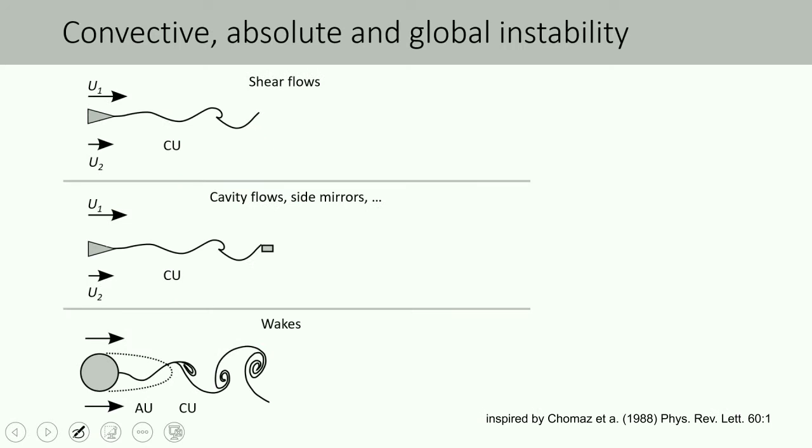The previous instabilities are local properties of a flow and therefore only valid for parallel or weakly non-parallel flows. In other words, the flow profiles of such flows change only little or not at all in downstream direction.